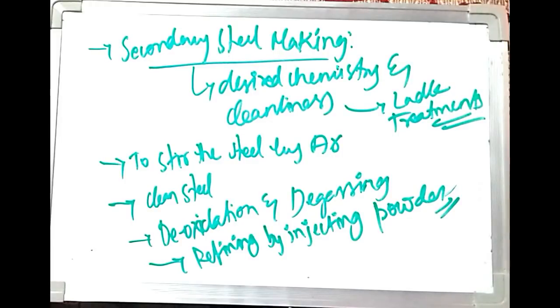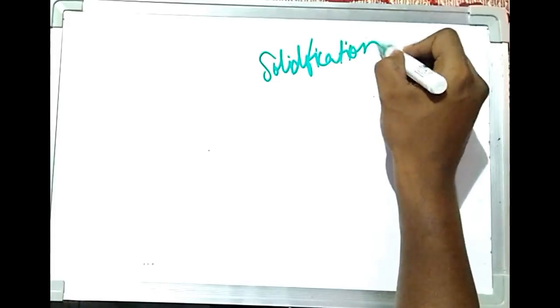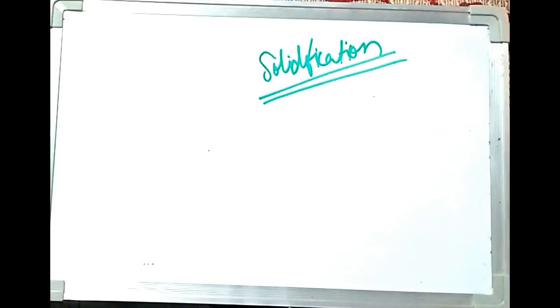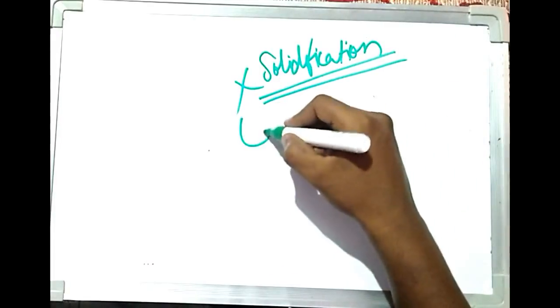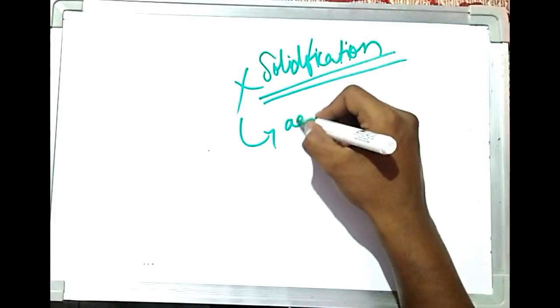Additional secondary steel making processes include refining by injecting powders, known as injection metallurgy. Since most of these processes take place in ladles, the residence time in ladles will be longer. There is a risk of solidification due to heat loss during this extended residence time at room temperature surroundings.